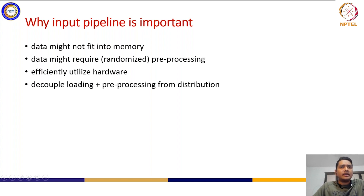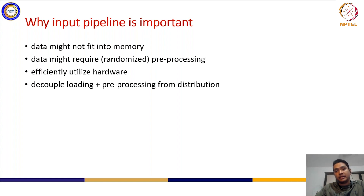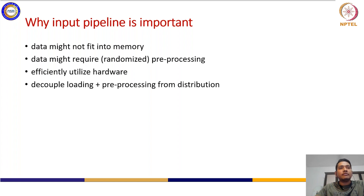Let's see how to decouple loading and pre-processing. Inside your pipeline you might have data loading and pre-processing as two stages, and you can decouple them from the distribution of the data. Loading happens at the end, and before that you pre-process. Using efficient pipelining to decouple them and distribute data for model training is what we will see next.